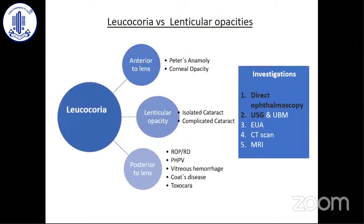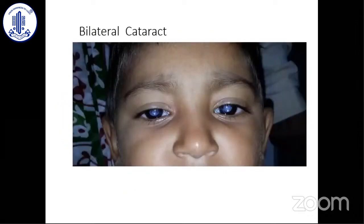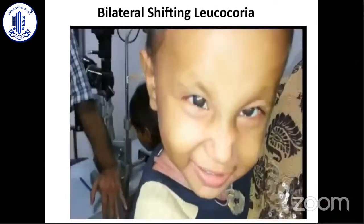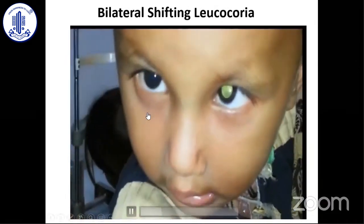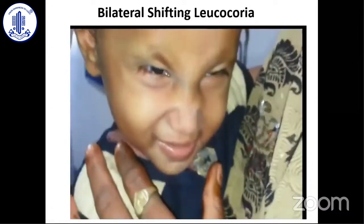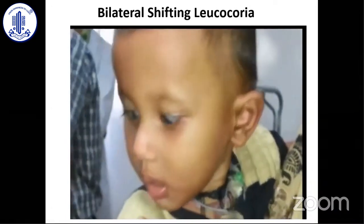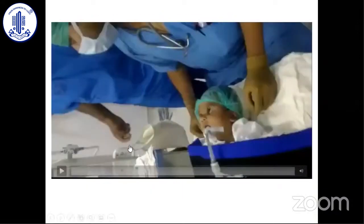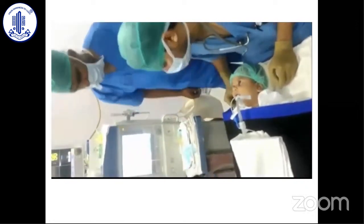When a leukocoria patient comes to you, check whether the opacity is in the cornea, the lens, or the vitreous. The best test is ultrasound, which gives lots of information. A bilateral cataract versus bilateral leukocoria due to bilateral retinal detachment can be differentiated. One important sign: if the opacity comes and goes — a shifting, fleeting leukocoria — it is behind the lens. That's why you need a VR surgeon standing next to you. Tailor-made investigations can then be done.